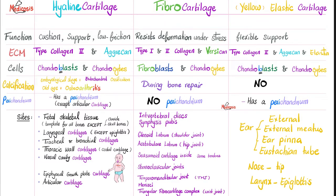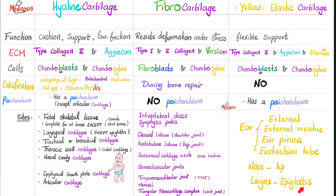Where do you find fibrocartilage? Intervertebral discs, symphysis pubis, the labrum of the glenoid for the shoulder joint, the labrum of the acetabulum at the hip joint, the temporomandibular joint, the menisci of your knee, and the triangular fibrocartilage complex of your wrist joint. Elastic cartilage is found in the ear pinna, external auditory meatus, the tip of your nose, and the epiglottis. Among all laryngeal cartilages, only the epiglottis is elastic; the other laryngeal cartilages are all hyaline.